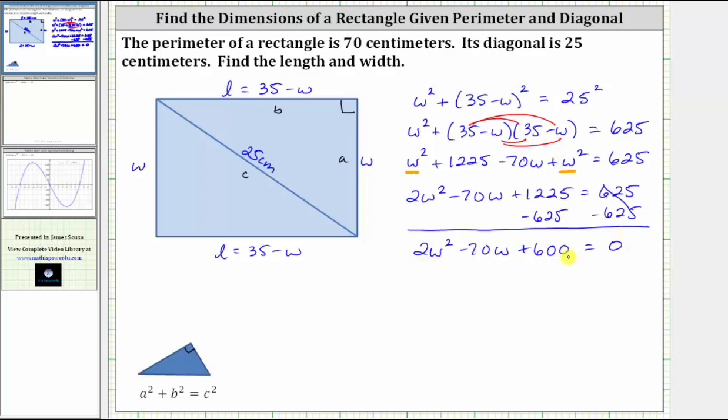Notice how we have a quadratic equation, which we can now solve by factoring. Remember, the first step in factoring is to factor out the greatest common factor, which in this case is two. If we factor out two, we're left with W squared minus 35W plus 300.